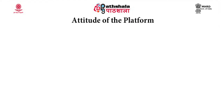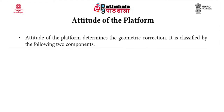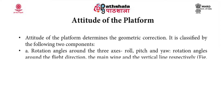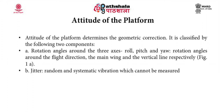Coming to the next topic of attitude of the platform: attitude of the platform determines the geometric correction. It is classified by the following two components. First, rotation angles around the three axes which include roll, pitch, and yaw — these are the rotation angles around the flight direction, the main wing, and the vertical line respectively. Second is jitter, which is random and systematic vibration which cannot be measured.